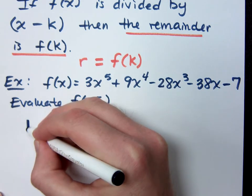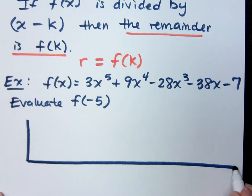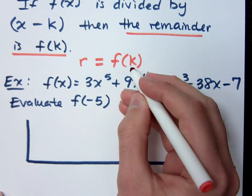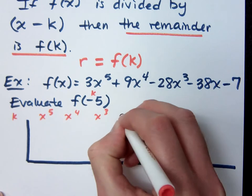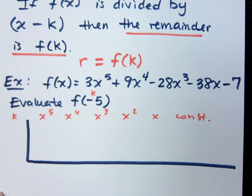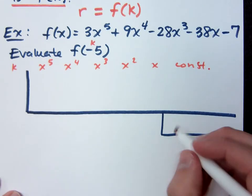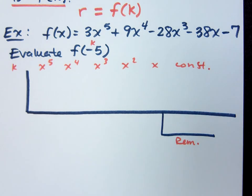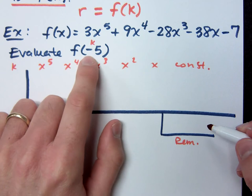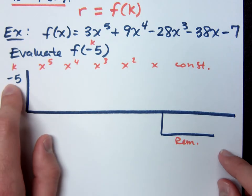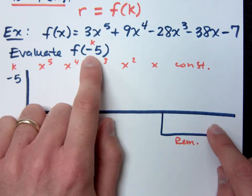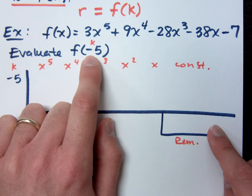If I do synthetic division, my k is right here — this is my k, which is negative 5. I've got x to the 5th, 4th, 3rd. When I do my synthetic division, my remainder goes in the box at the bottom right. What the remainder theorem is saying is that the number you get in that box is f of negative 5, as long as your k value is negative 5. If I do synthetic division, this remainder is my function evaluated at negative 5. Do you understand that?